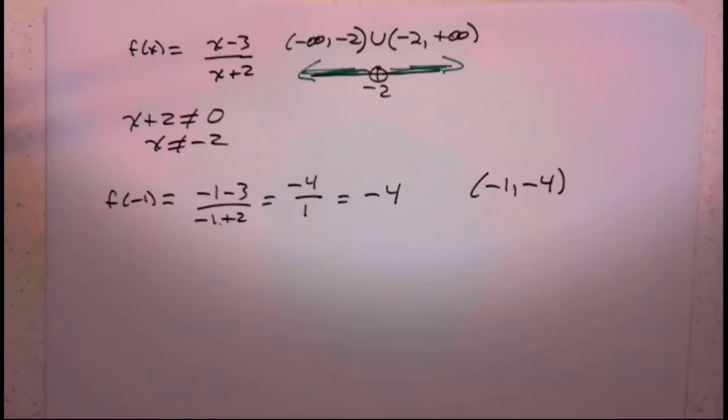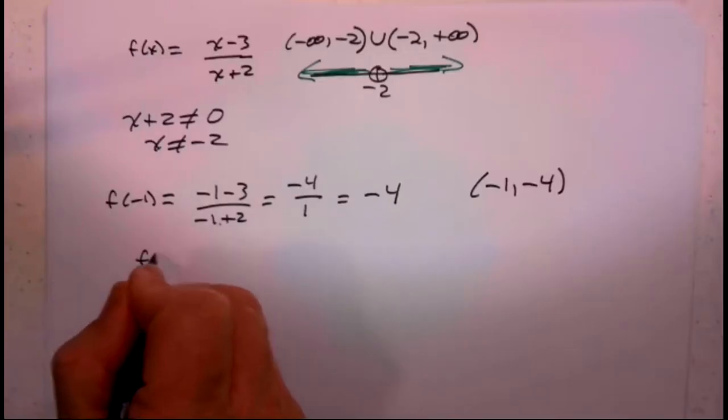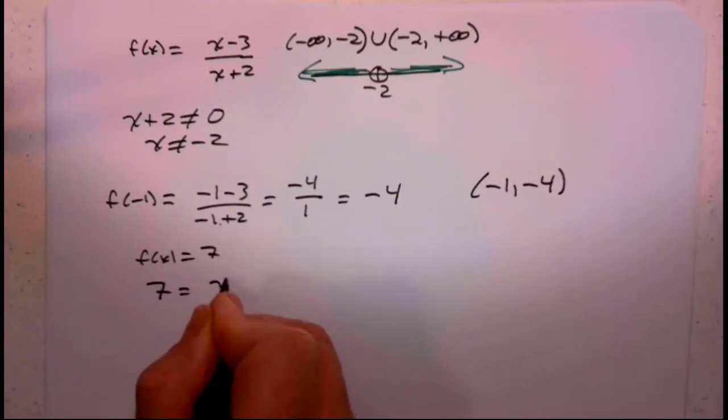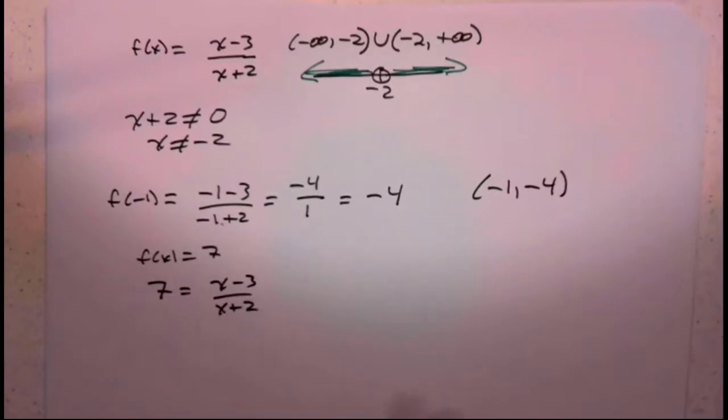All right, what is the next thing it's asking us to look at? If f of x equals 7, what point on the graph corresponds to this? What we have here is f of x is 7. So 7 is x minus 3 over x plus 2. And from that, we want to solve for x.